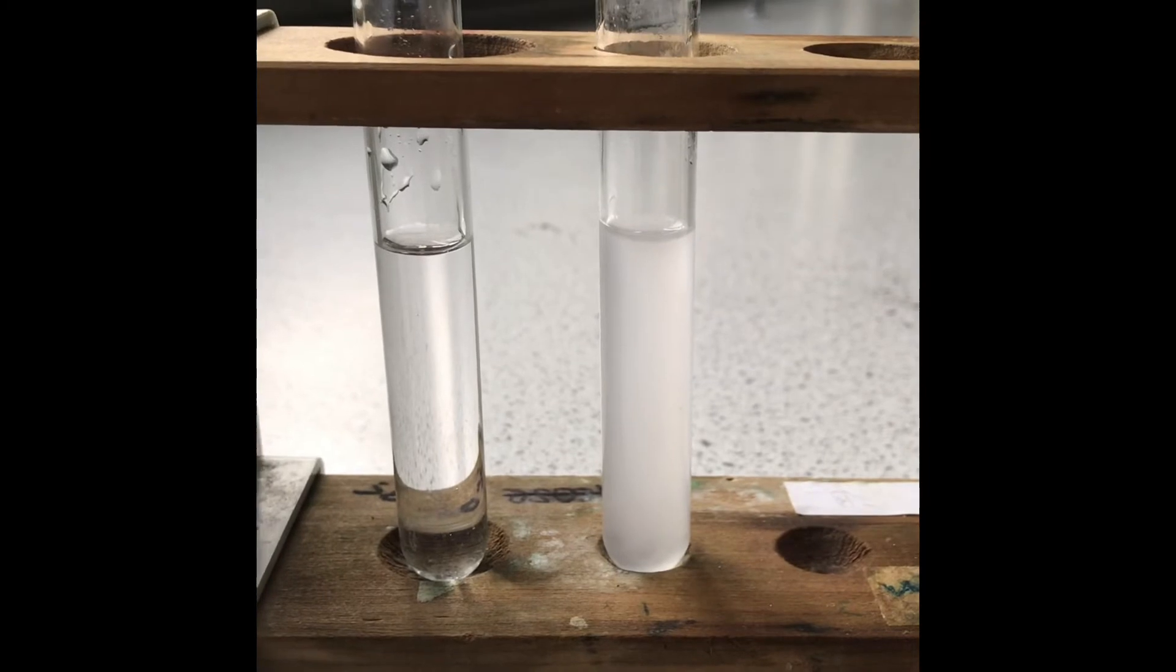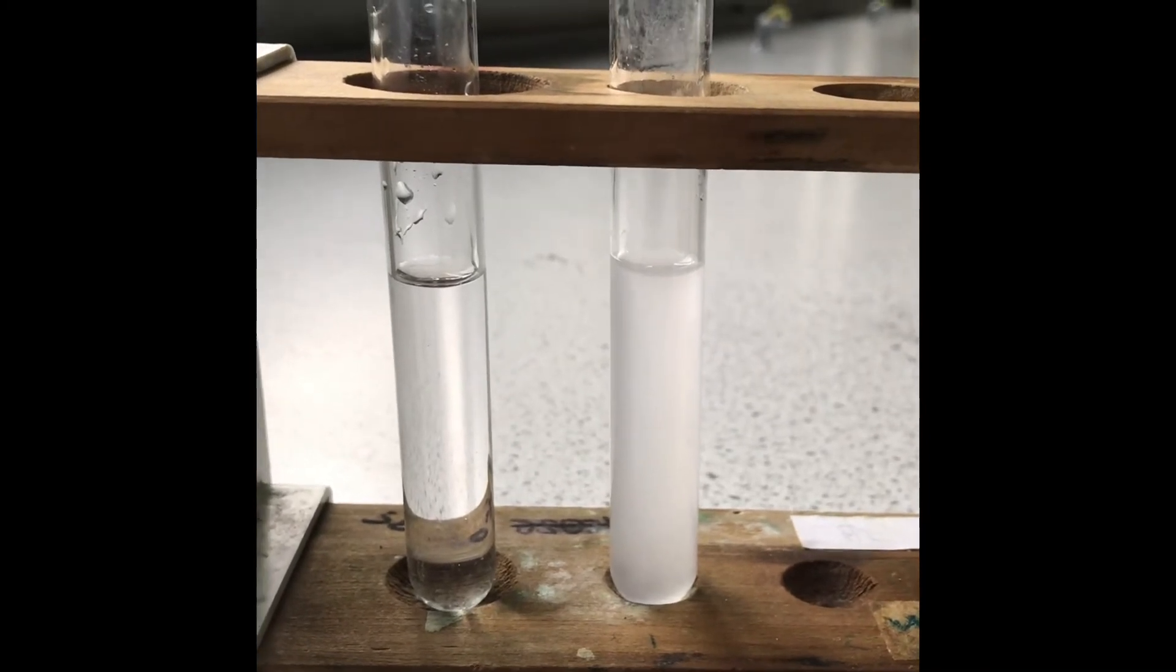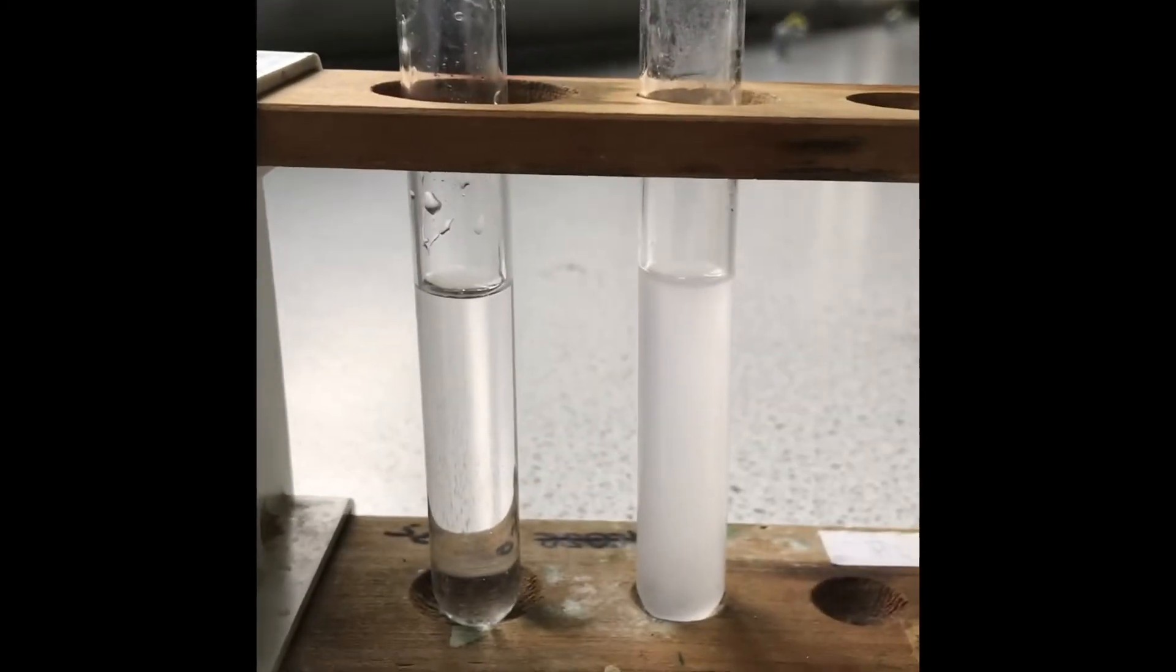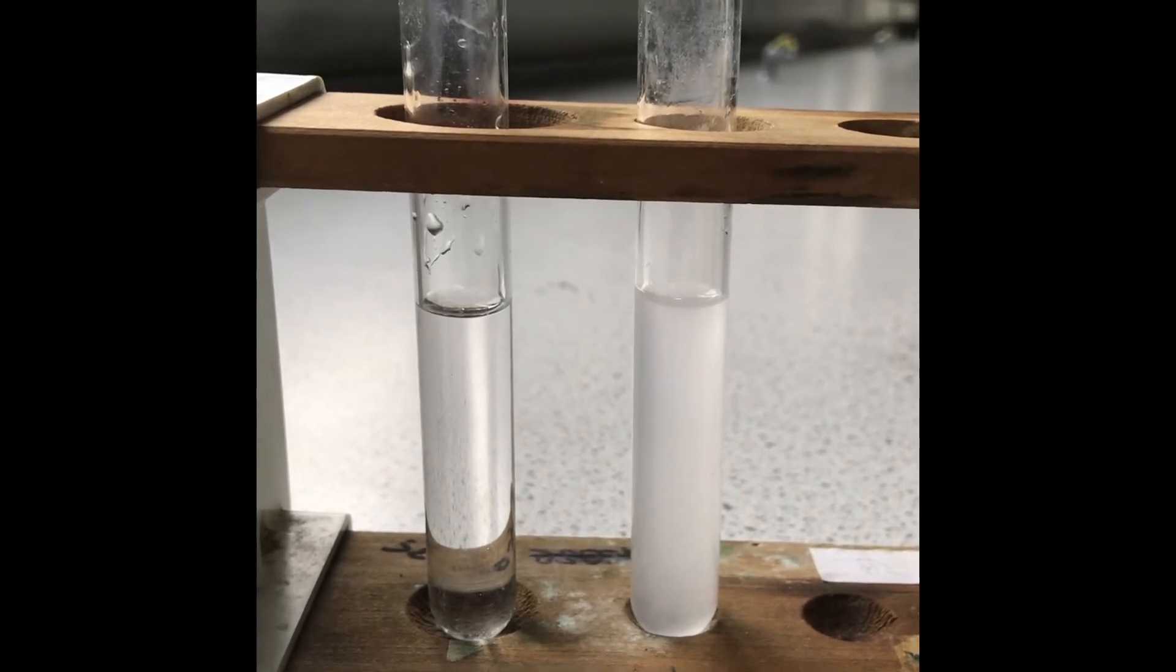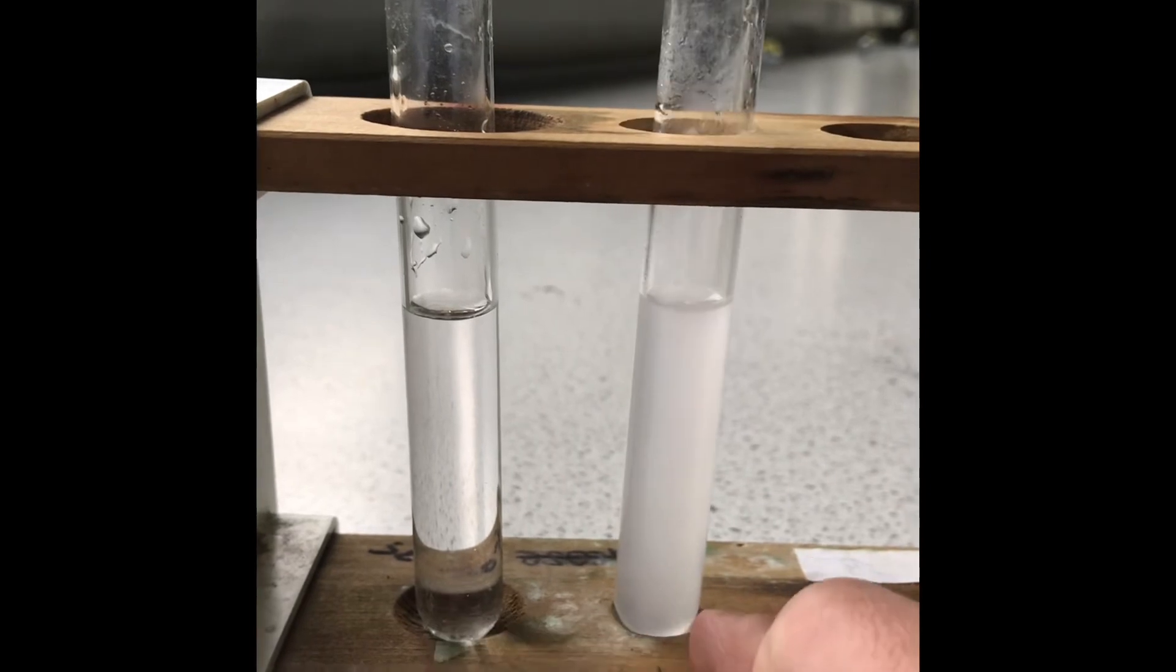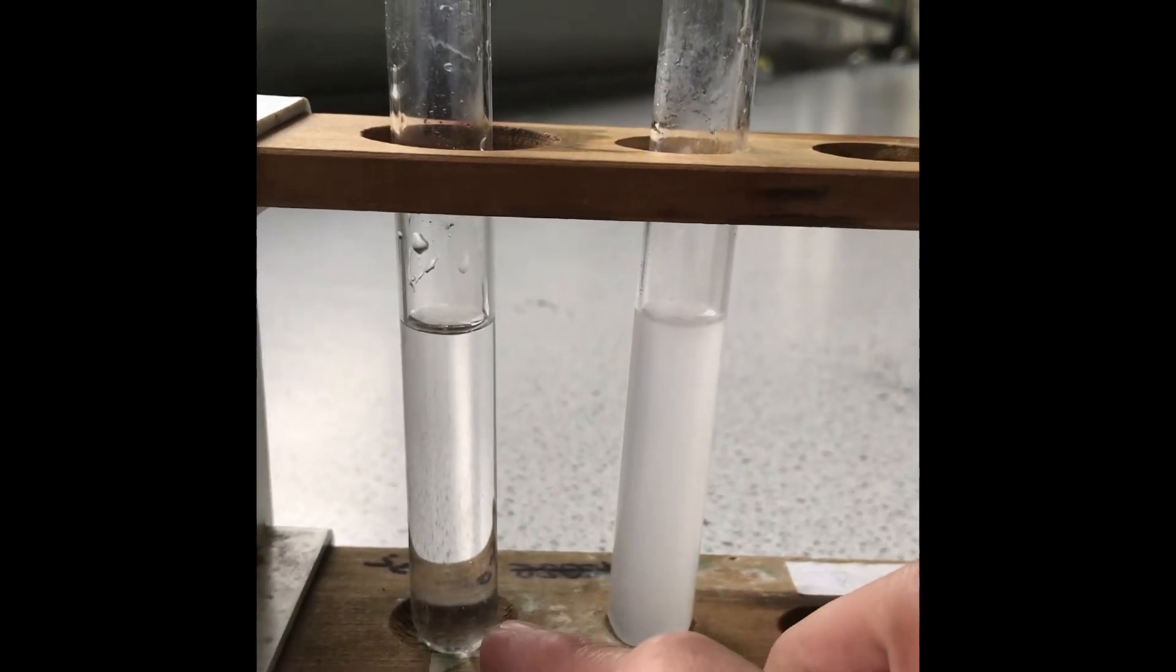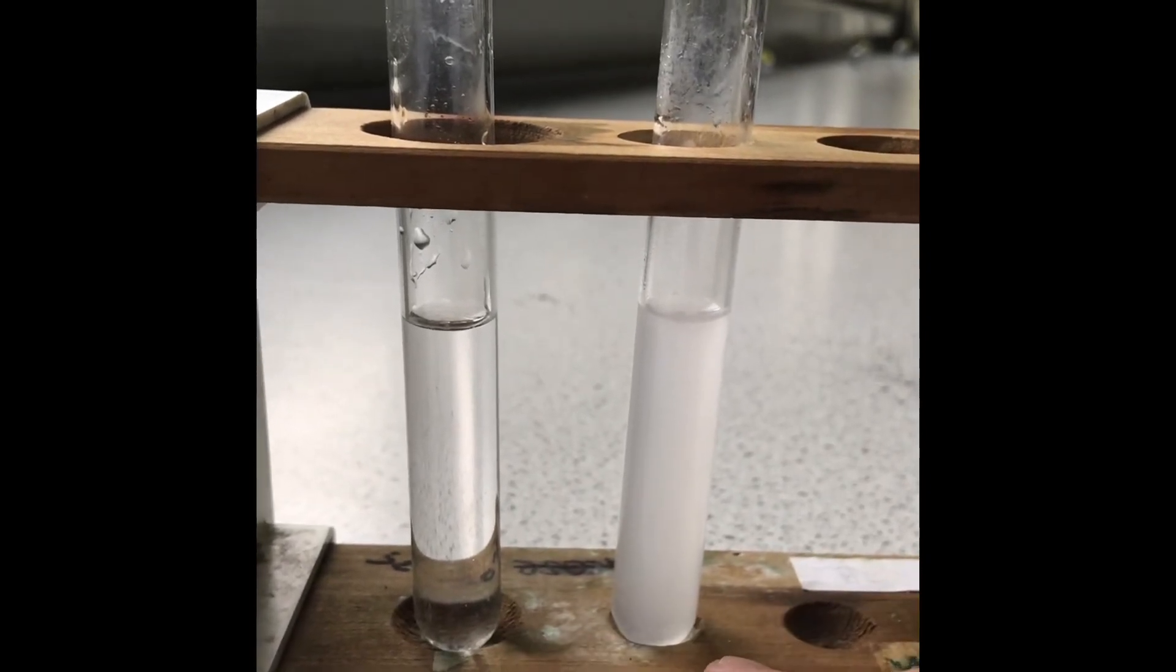The test tube on the left contains lime water. The test tube on the right contains lime water that carbon dioxide gas has passed through. As you can see, when carbon dioxide passes through lime water, the color changes from clear to cloudy.